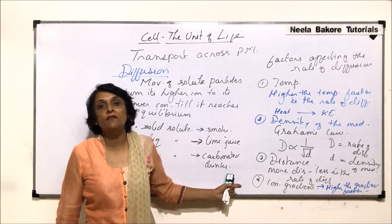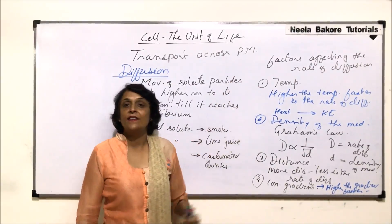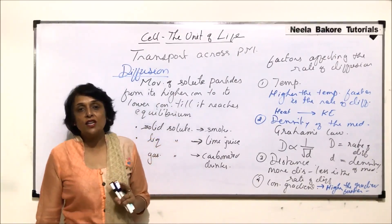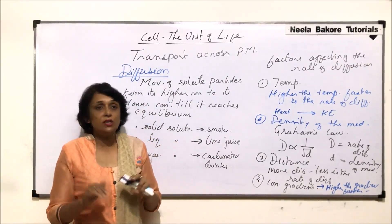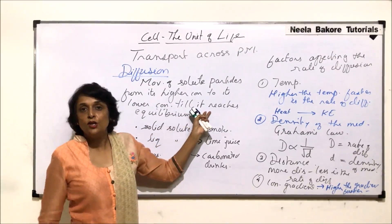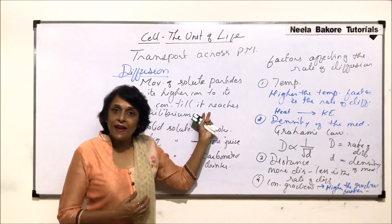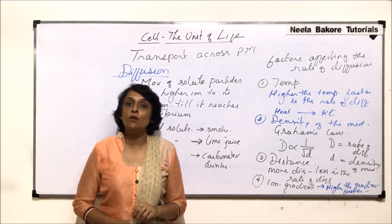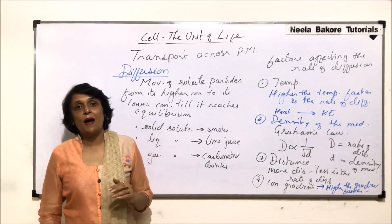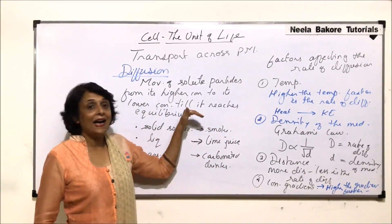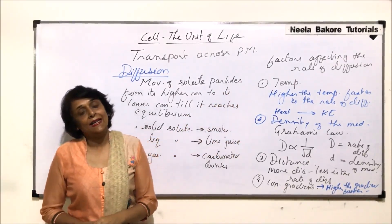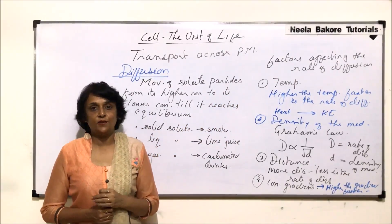To summarize, diffusion is a passive process that takes place till equilibrium is reached, and it does not require a membrane. The four important factors affecting the rate of diffusion are: temperature, density of the medium, distance, and concentration gradient. In the next part we will talk about the applications of diffusion and the process of facilitated diffusion.